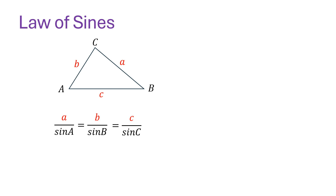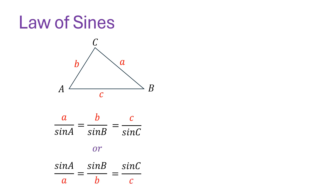In short, the ratio of the pairs of an angle and its opposite side is equal to the other pairs. You can also write it with the angle on top and the sides at the bottom.